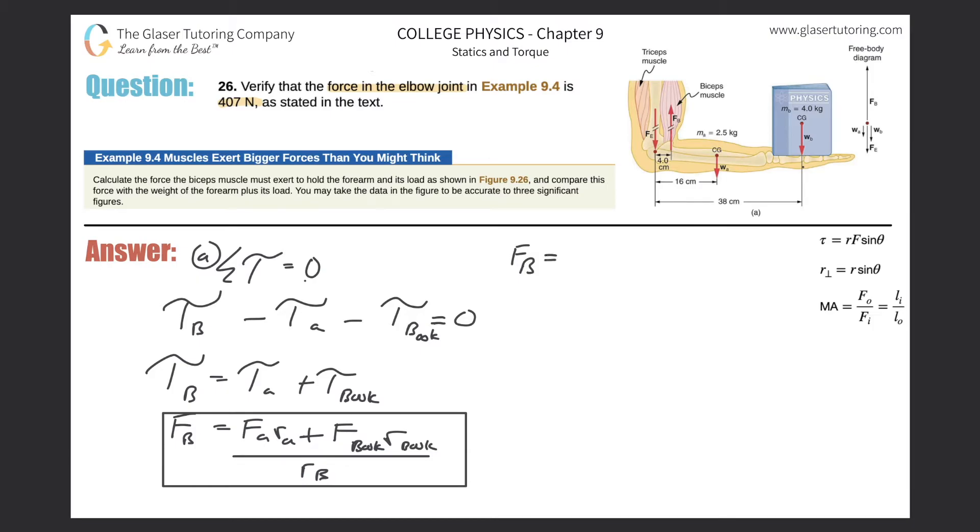So the force the bicep is exhibiting will be now the weight of the arm, and they told us the mass was 2.5. So it's basically 2.5 times 9.8, multiplied by then by that lever arm. These all have to be in meters. So convert this value into meters. So it's 0.16. Now then that's plus the book's values, the mass is going to be 4 times gravity, times then the lever arm of 0.38, all divided by now the lever arm for the bicep, which was 0.04. Remember, it was 4 centimeters, got to convert that into meters.